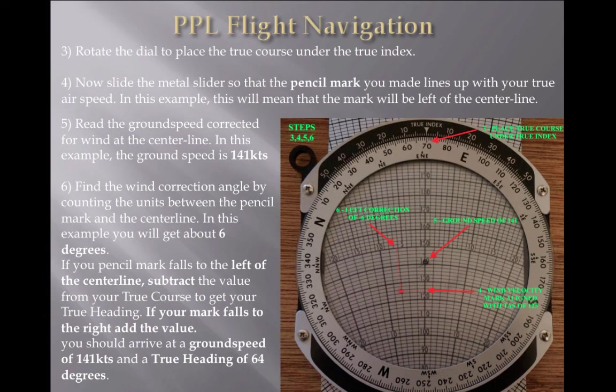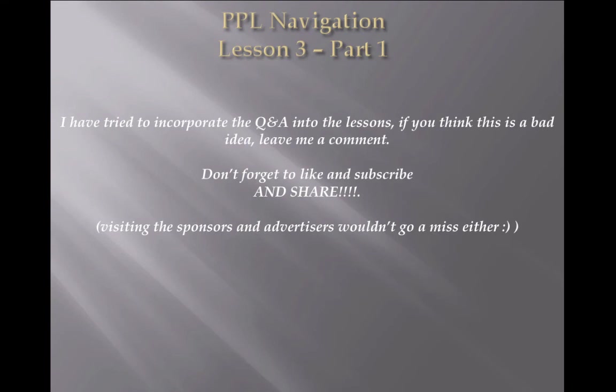You should arrive at a ground speed of 141 with a true heading of 64 degrees, and it really is just that simple. Practice it and keep practicing — it doesn't take a lot to remember the process. Just keep going round and round; the more you do it the better you get, it becomes muscle memory after a while. Keep watching the video a few times and work through that example. Also check that wind component grid and see if interpolation is for you — it's not for me, but we all learn in different ways. Keep at it until you find the right method for you. You will have to do one or two questions on the exam to do with this. Best of luck, and I'll see you in Lesson 3, Part 2.